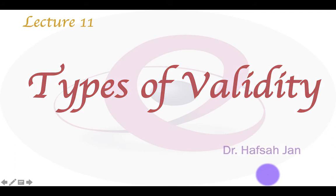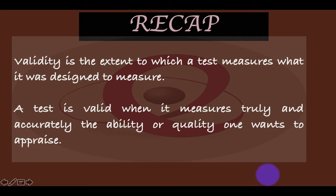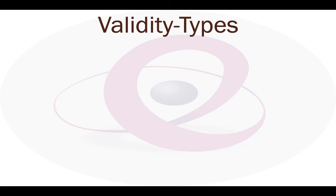In the previous video we discussed the concept of validity and learned about some of its characteristics. Let us first have a quick recapitulation. Validity is the extent to which a test measures what it is designed to measure. A test is valid when it measures truly and accurately the ability or quality one intends to measure. No assessment is valid for all purposes — a test is valid for a particular purpose only.